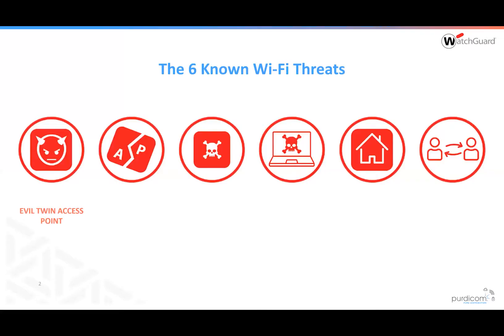There are six known threats when it comes down to Wi-Fi. The first one is the evil twin access point — probably the most dangerous. Then we have misconfigured APs, the most common problem people have with their Wi-Fi. Rogue access points, rogue clients, neighborhood access points, and the ad hoc network.